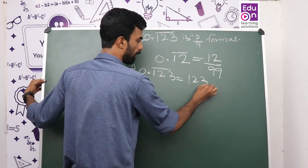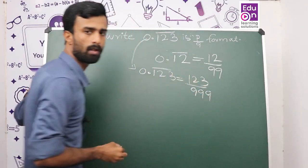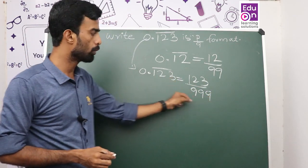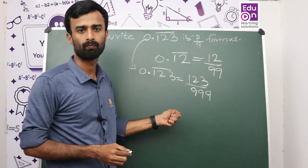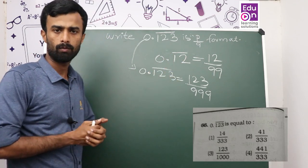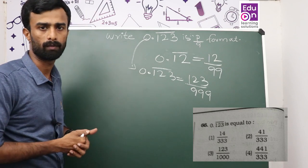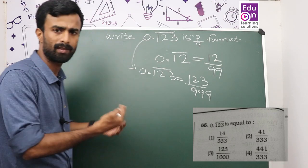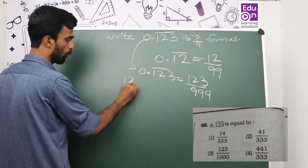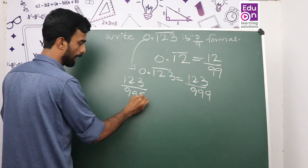The answer is simple: 999. So 123 all divided by 999. If you look at the same pattern, you can divide. We have 123 divided by 999.